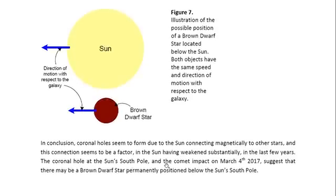So, in conclusion, coronal holes seem to form due to the Sun connecting magnetically to other stars, and this connection seems to be a factor in the Sun having weakened substantially in the last few years. The coronal hole at the Sun's south pole and the comet impact on March 4, 2017, suggest that there may be a brown dwarf star permanently positioned below the Sun's south pole. I am Dr. Claudia Albers, Planet X physicist. Thank you for watching.